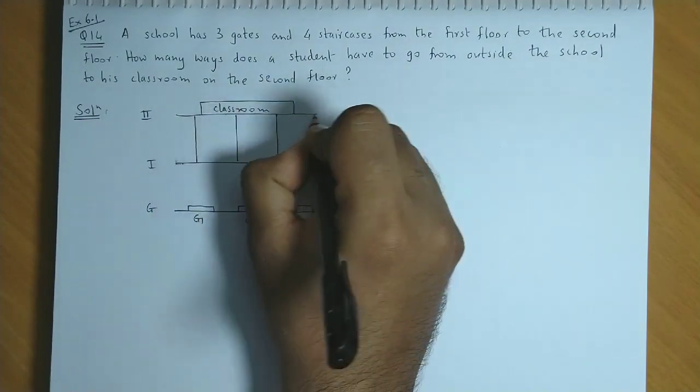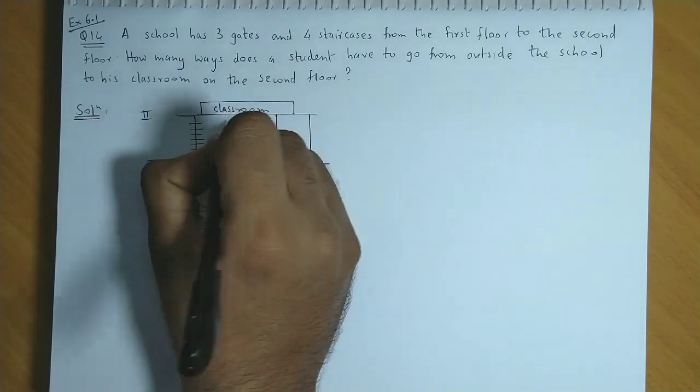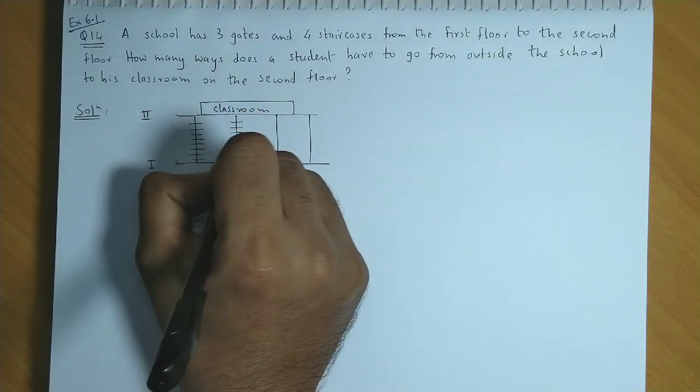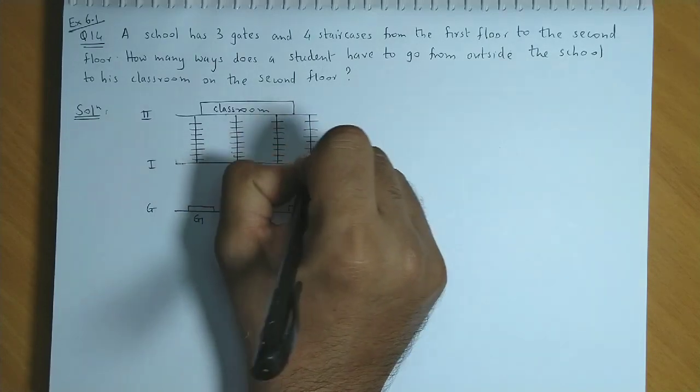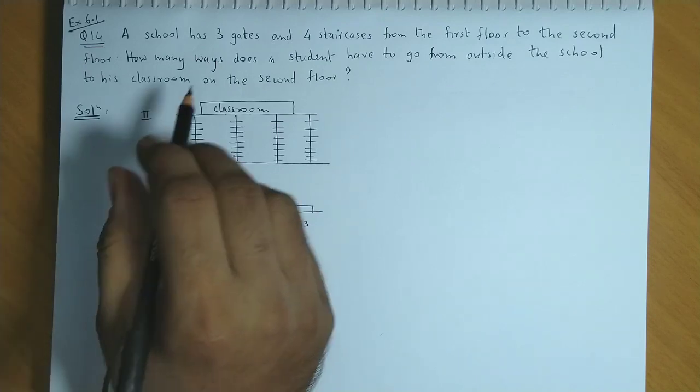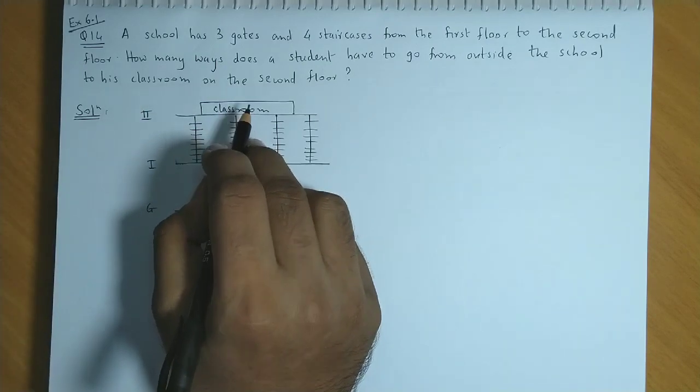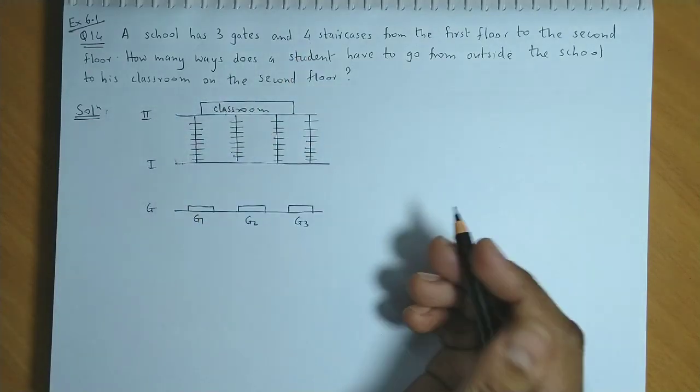So we have four staircases connecting the first and the second floor. Now we need to find how many ways the student can go from outside to the classroom on the second floor.